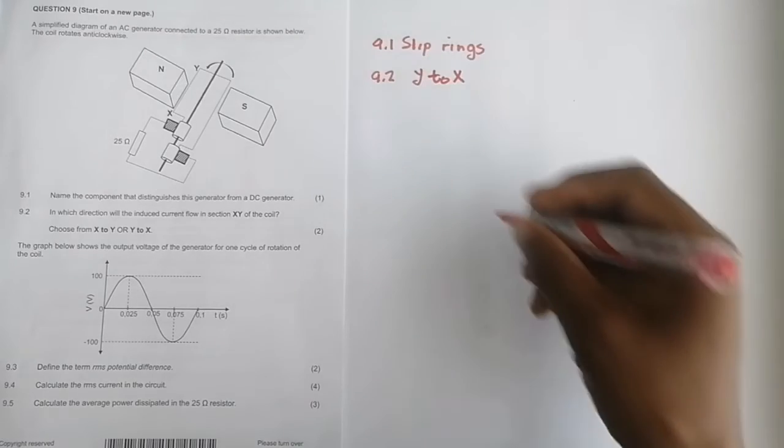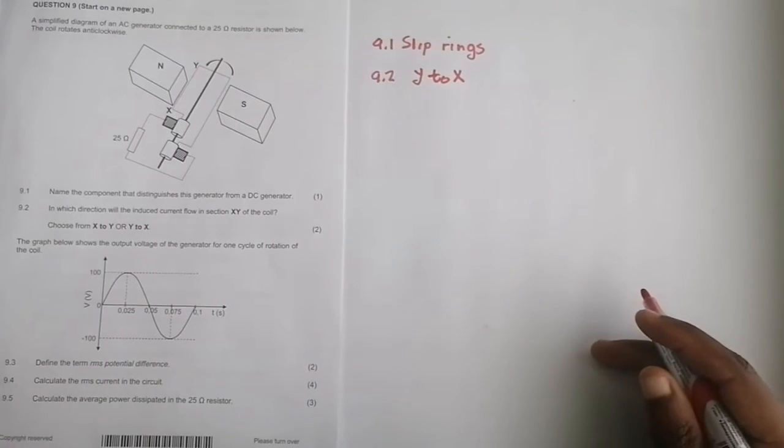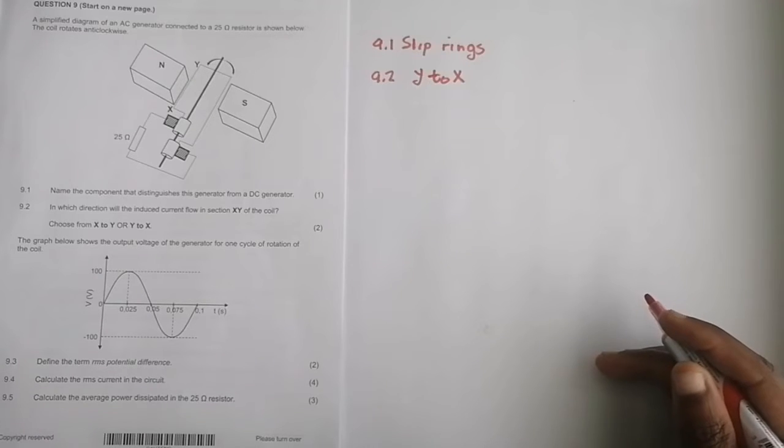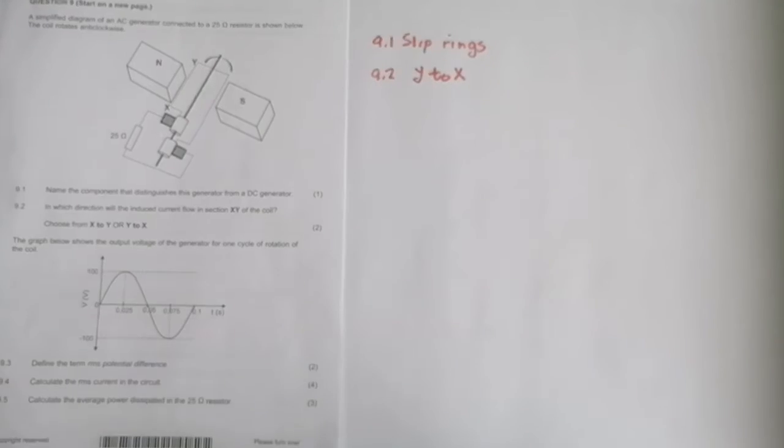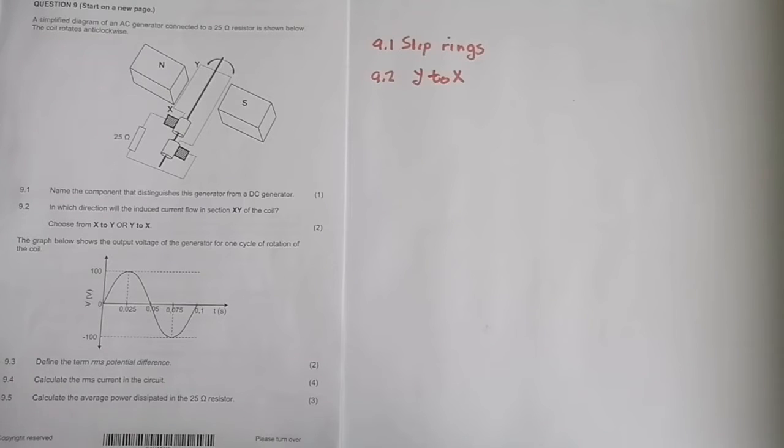The graph shows the output voltage of the generator for one cycle of rotation. They say define the term RMS potential difference. I've always hated that definition. It's something about the equivalent DC, but please just look it up and verify it.